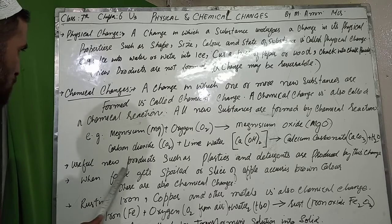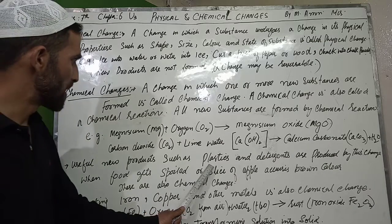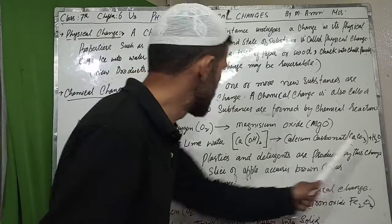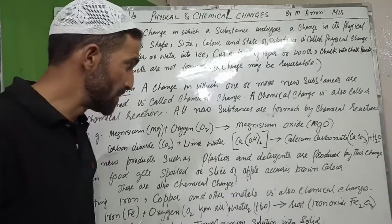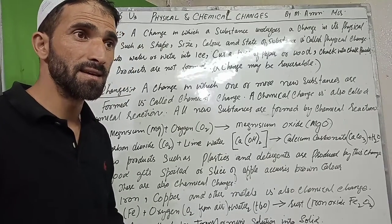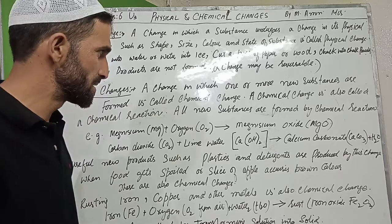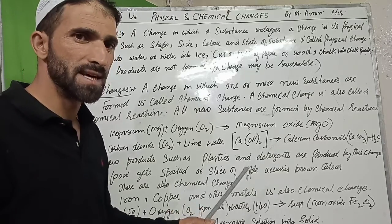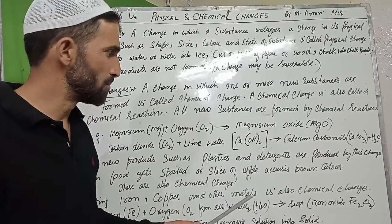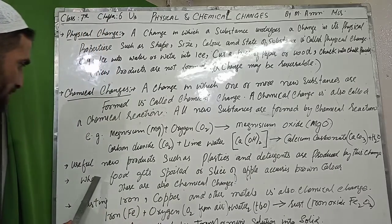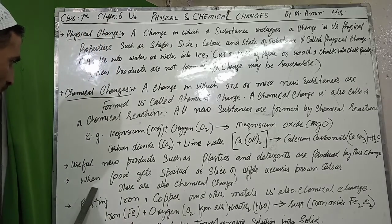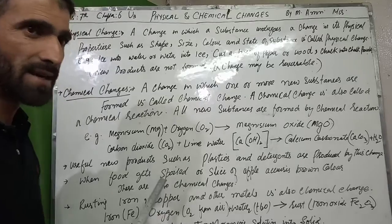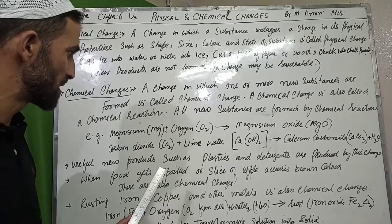Chemical change is very useful. New products such as plastics and detergents are products of chemical change. Many more things can be produced by chemical change. When food gets spoiled, that is also a chemical change.